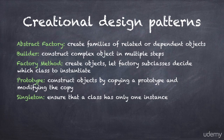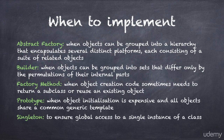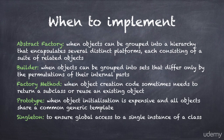We also talked about when to implement these patterns. You implement the abstract factory pattern when your objects can be grouped into a hierarchy that encapsulates several distinct platforms, each consisting of a suite of related objects. You implement the builder pattern when your objects can be grouped into sets that differ only by the permutation of their internal parts, and if the construction process consists of a number of discrete steps.